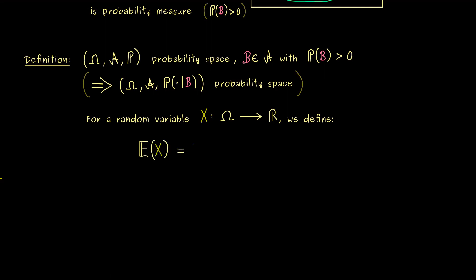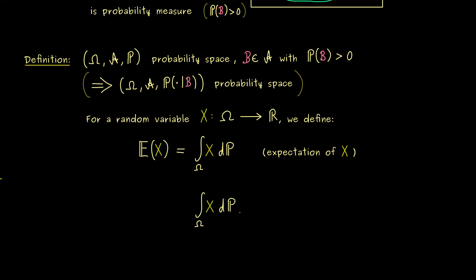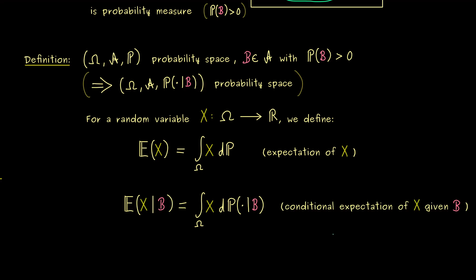However, changing the measure will change probabilities related to the random variable — for example the expectation, which is defined as the abstract integral of the random variable with respect to the given probability measure. This definition is not new; it's the ordinary expectation, but nothing stops us from changing the probability measure in this integral, assuming the integrals exist. What we have then is the expectation of the random variable in the new probability space, and we write it as E of X given the condition B — the conditional expectation of the random variable X given the event B.